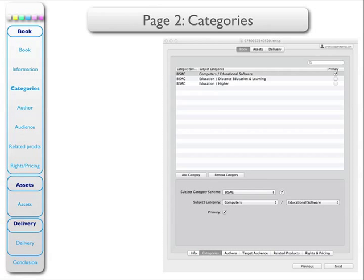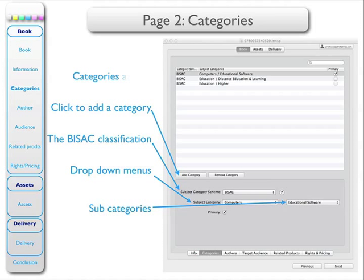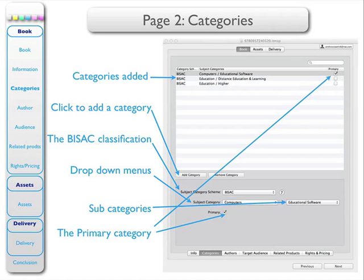The next item in the book section is the categories. This categorisation uses the BISAC system, where BISAC stands for Book Industry Standards Advisory Committee. To add a category, click here. The first category that I have is Computers, and the subcategory is Educational Software. You can add as many as you like. There's the primary category, and that is also shown up here.